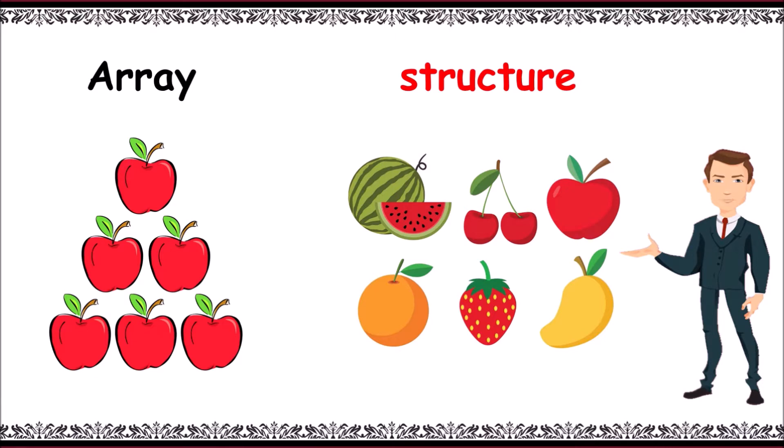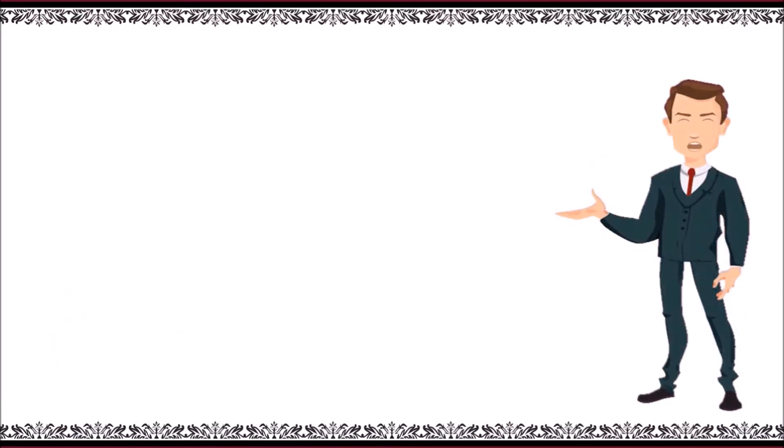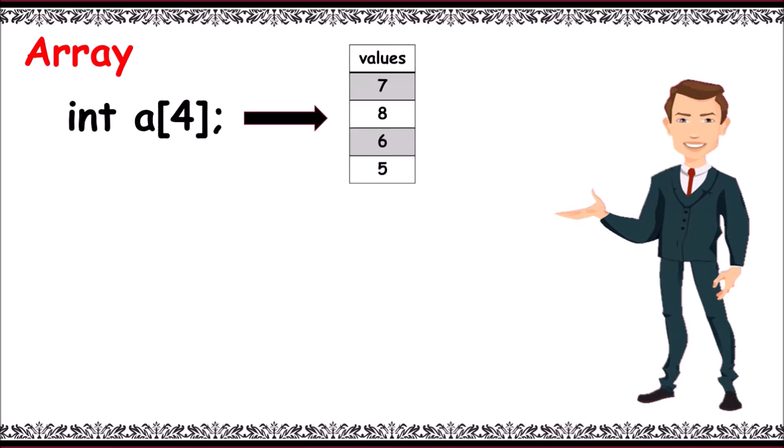Elements like a collection of different fruits, as shown in the diagram. Technically, an array is of a specific type. Here, int a[4] has four values: 7, 8, 6, 5 - all of the same type, that is integer type. Consider a structure.